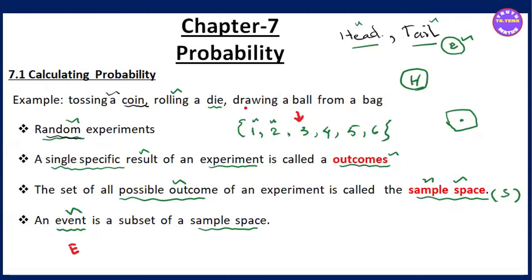Drawing a ball from a bag. We have to make the random experiment. So if there is time, we have to figure out how to work through it — we really have to do what we want. And we have to make the random experiment, and that's how possible outcomes are simple.